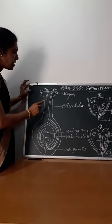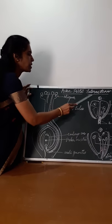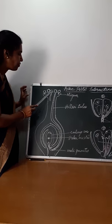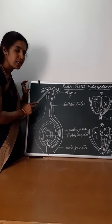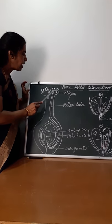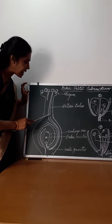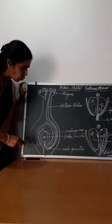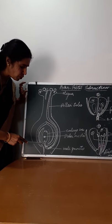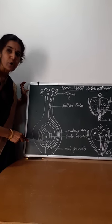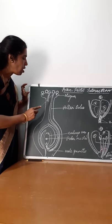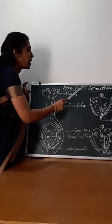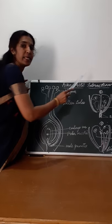What are the events which take place in pollen-pistil interaction? Landing of pollen grains on stigma, then pollen tube grows through the style and it reaches the ovule through the micropylar end. All these events together are known as pollen-pistil interaction.